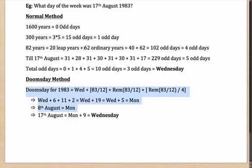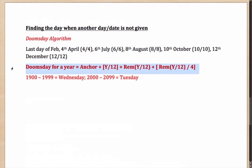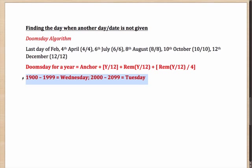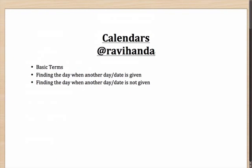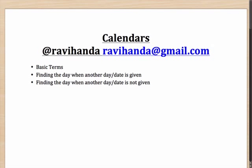The Doomsday method, once you figure it out, is much simpler than a whole lot of calculation. The only difficult parts are remembering the formula — anchor + (Y ÷ 12) + remainder + (remainder ÷ 4) — and the anchor years: Wednesday for the 1900s, Tuesday for the 2000s. The 4-4, 6-6, 8-8, 10-10, 12-12 pattern you can remember on your own. Hope you found this useful — please provide feedback at my Twitter handle Ravihanda or email ravihanda@gmail.com. Thank you.